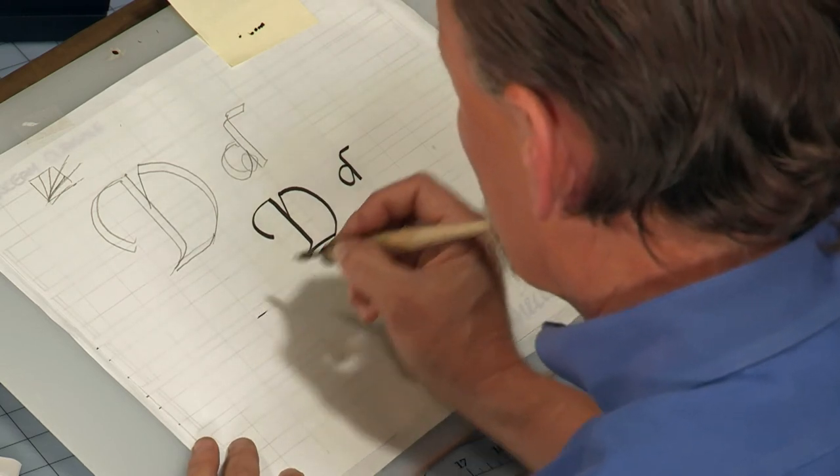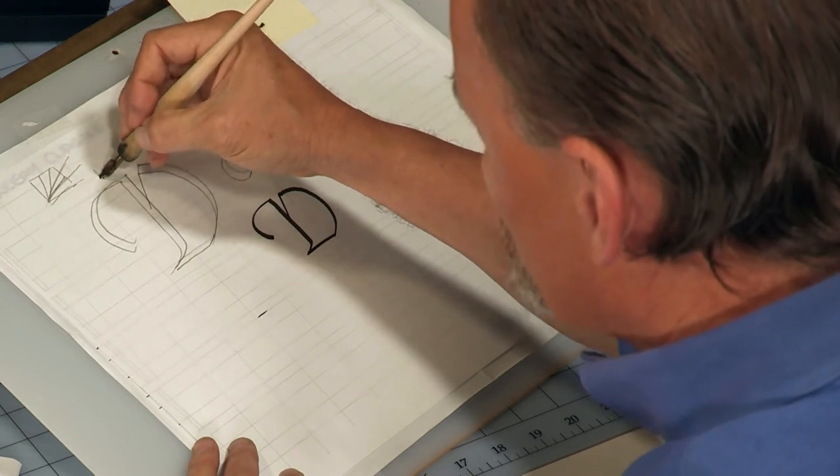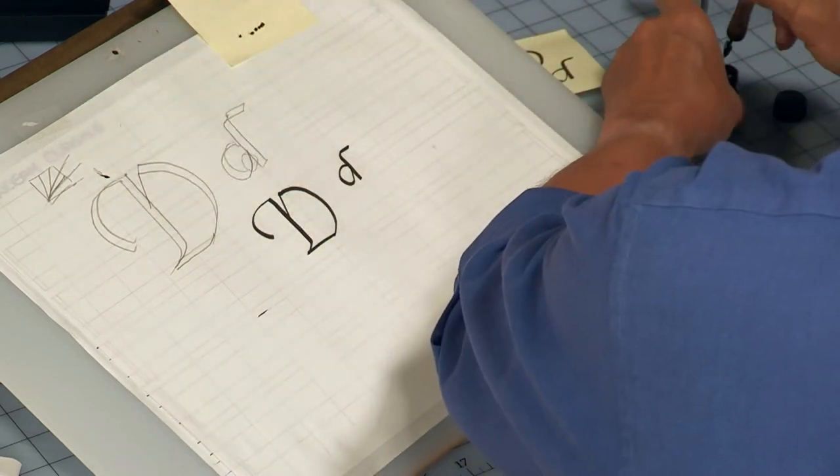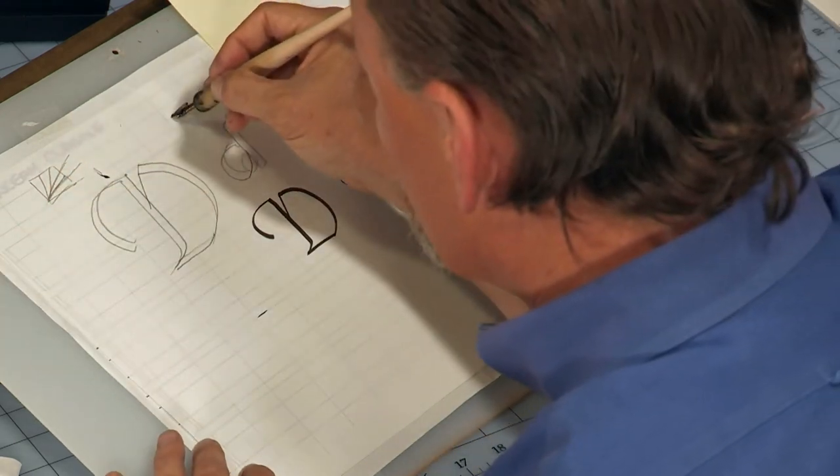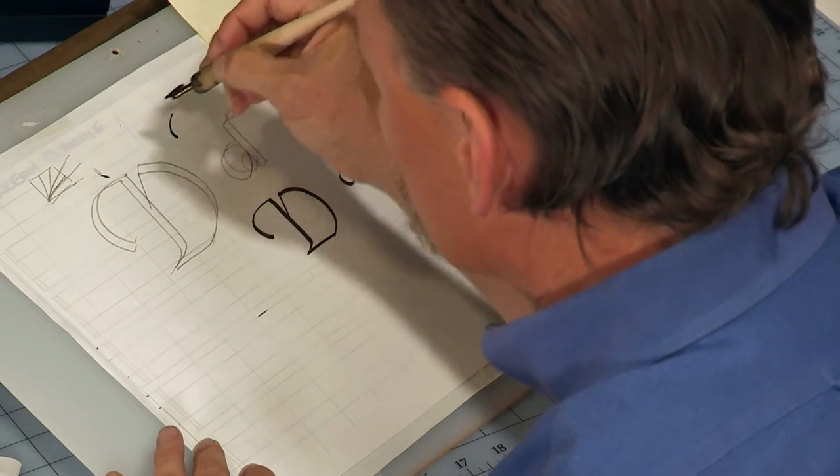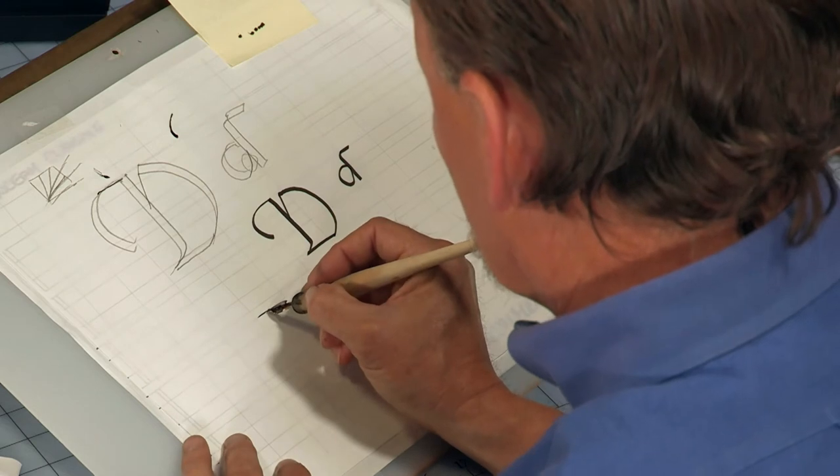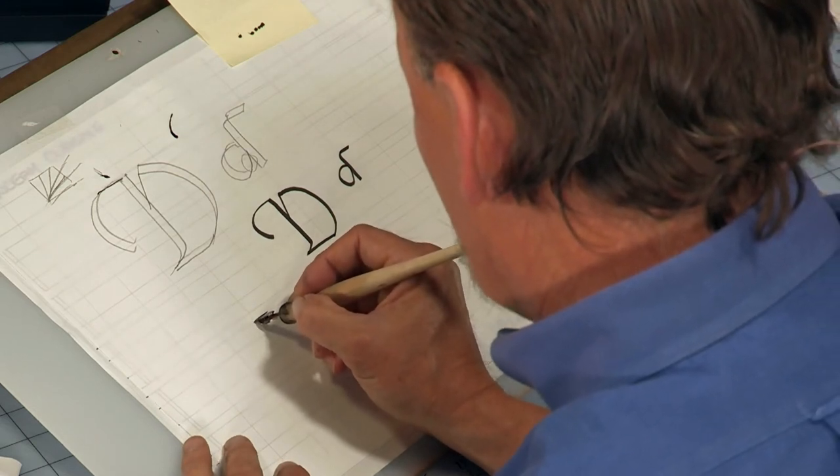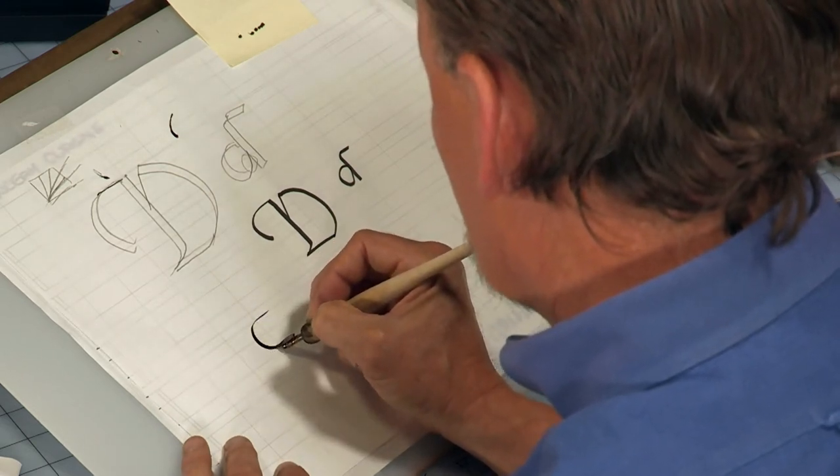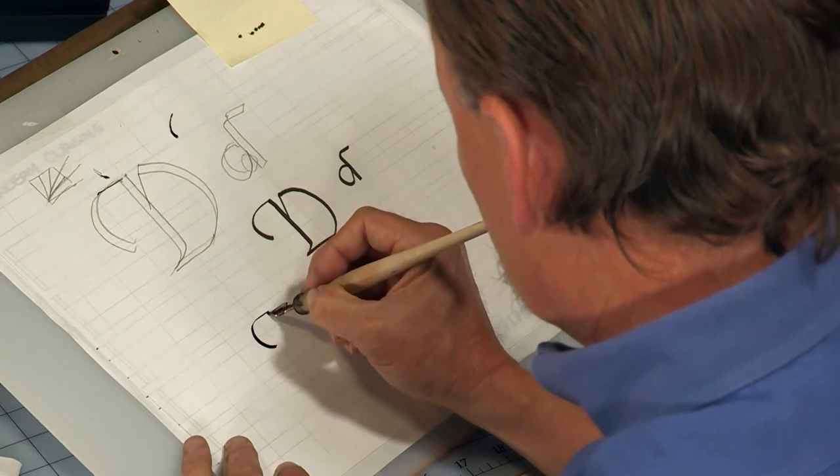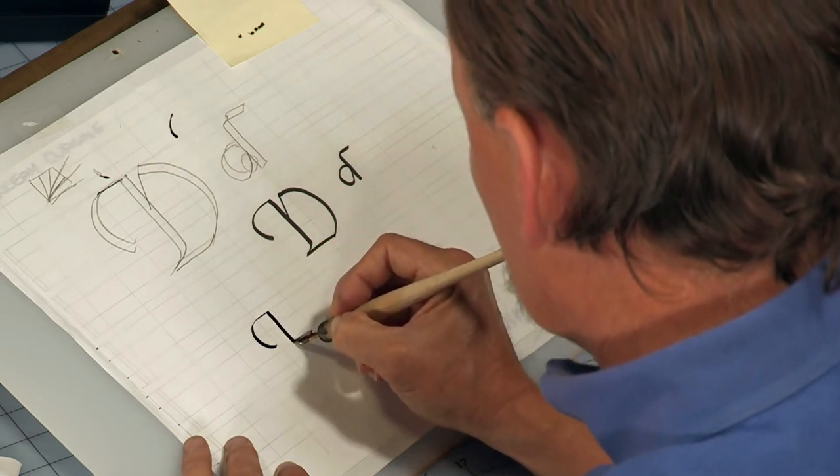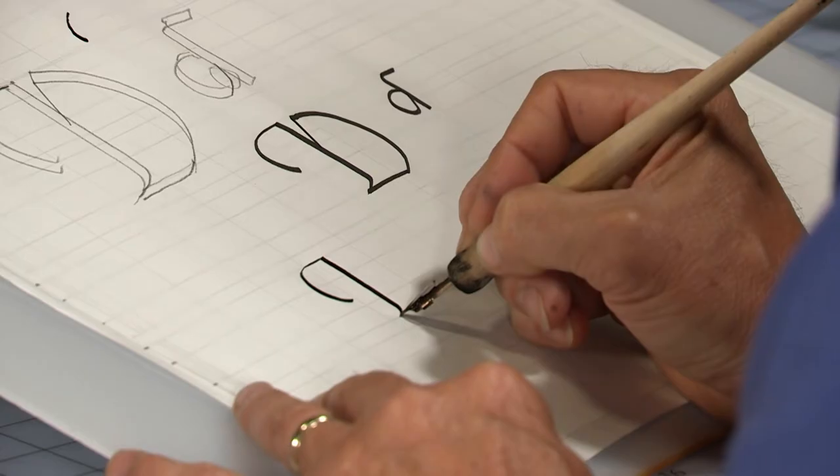I begin by going straight and this is really important. Don't let your initial curve start going downhill immediately. It'll look droopy. So start out by going straight across and then you begin the curve. See, straight across and then the curve. There we go. Then the stem all the way to the baseline and kick out to the left.